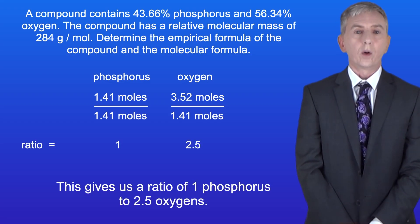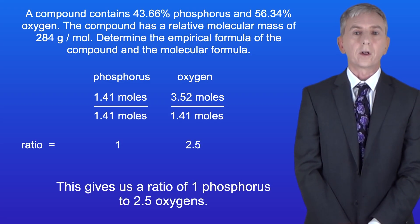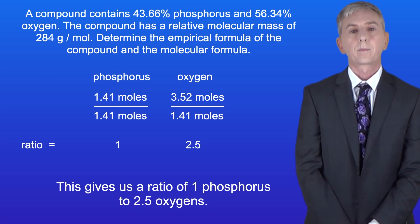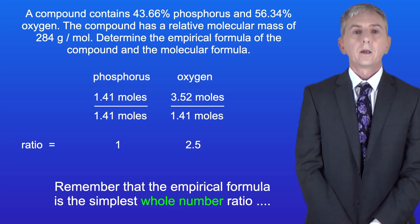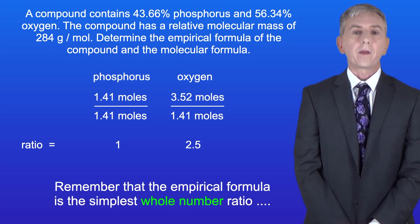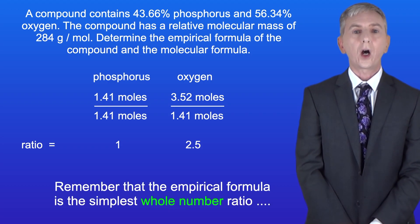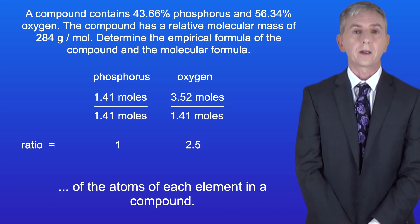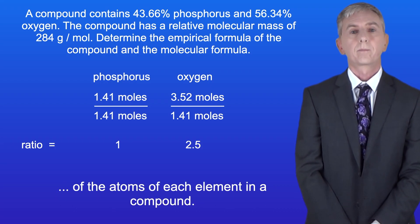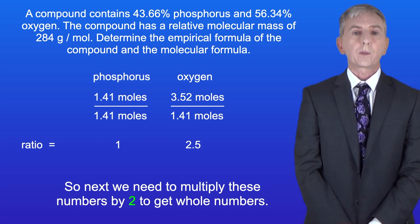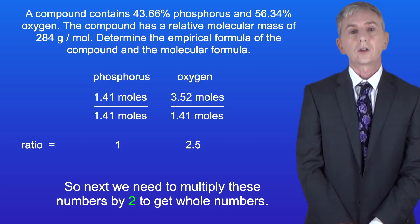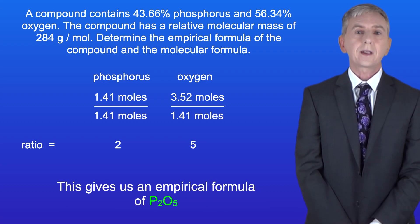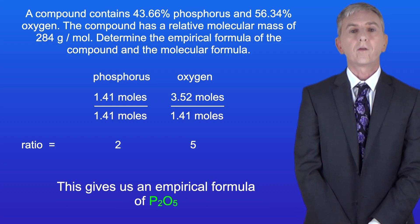This gives us a ratio of 1 phosphorus to 2.5 oxygens. Now remember that the empirical formula is the simplest whole number ratio of the atoms of each element in a compound. So next we need to multiply these numbers by 2 to get whole numbers. This gives us an empirical formula of P2O5.